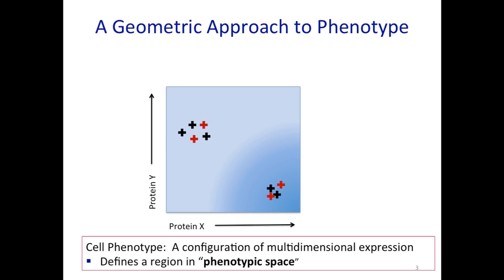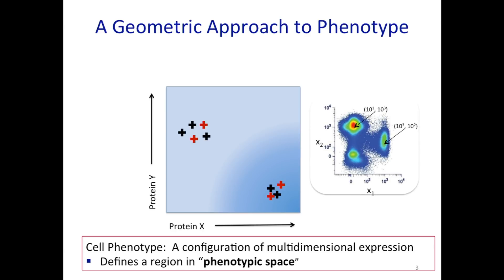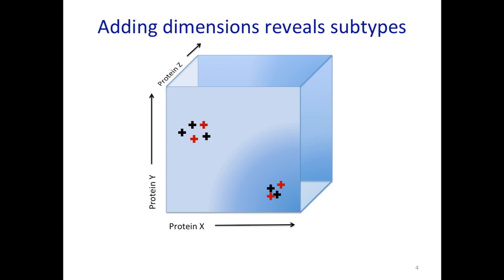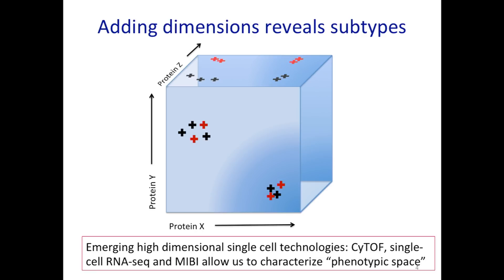But once we look at higher dimensions, we actually see that this is misleading — it's mixing two cell types. If we had looked at a third protein, protein Z, we actually have a splitting. Rather than two cell types, we have four. So in order to map, understand, and characterize our cell types, the first thing we need is to look at cells at high dimension to find what combinations of proteins exist in cell space.